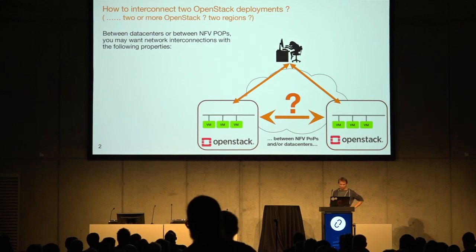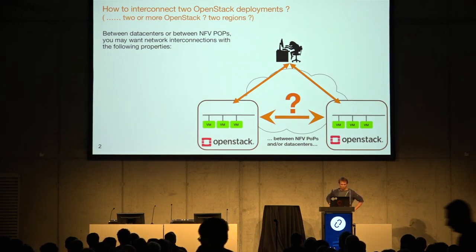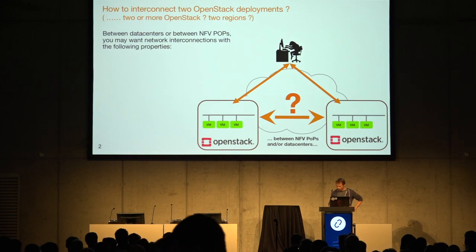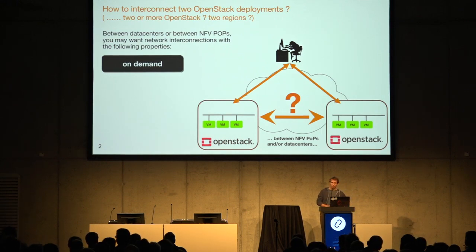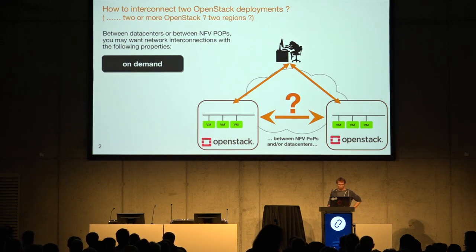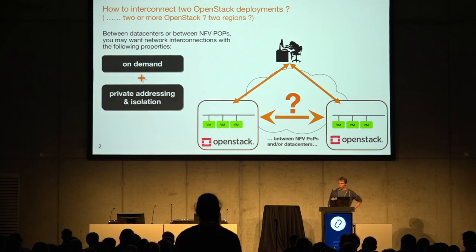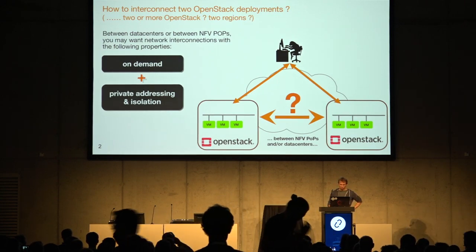Between data centers in traditional clouds or between NFV pops, you have cases where you will want, as an end user, to interconnect networks or virtual routers with specific properties. Sometimes you will want this to be on demand — in fact, we always want this to be on demand, and the interconnections to provide private addressing and isolation.